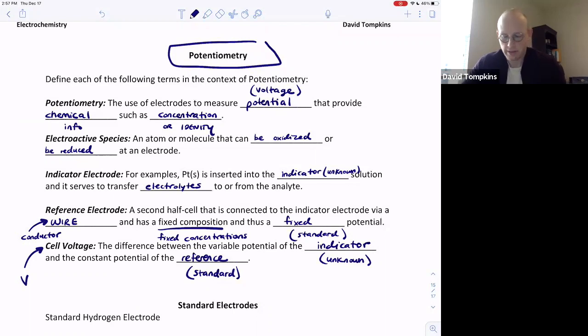For more practice with potentiometry, you can visit unit four of my electrochemistry portion, the analytical course guide, and that is at chemguides.com.